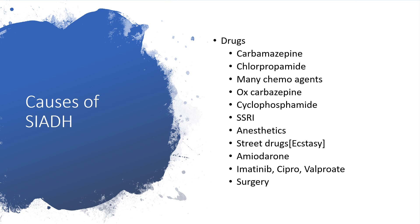Some medications are not left out. On the list we have carbamazepine — if you check my presentation on carbamazepine, you will see how hyponatremia is very pronounced in people taking it. Also chlorpropamide, many chemotherapeutic agents, oxcarbazepine, cyclophosphamide, and antidepressants like selective serotonin reuptake inhibitors (SSRIs). SSRIs can cause SIADH. Also antidiuretic agents and street drugs like ecstasy, and amiodarone.